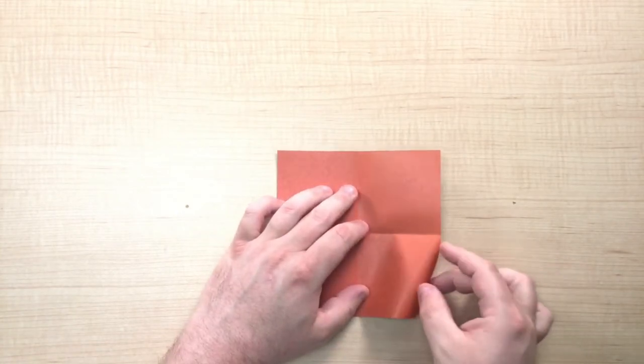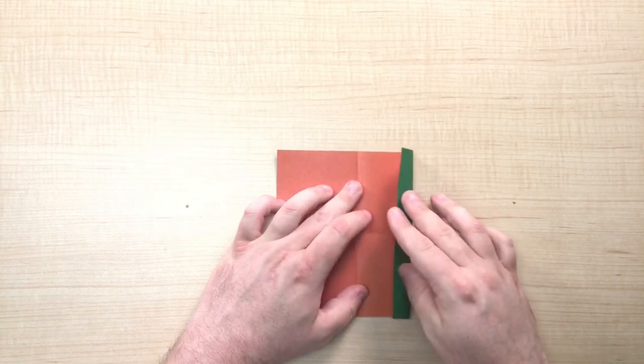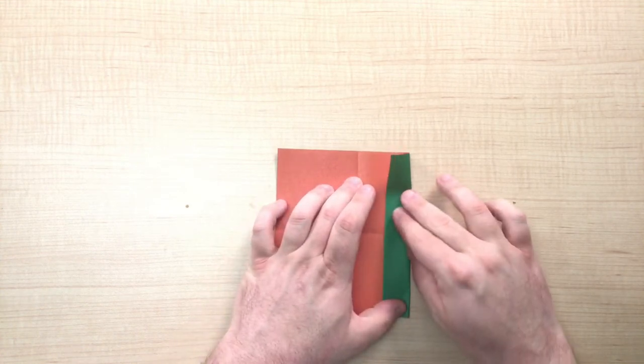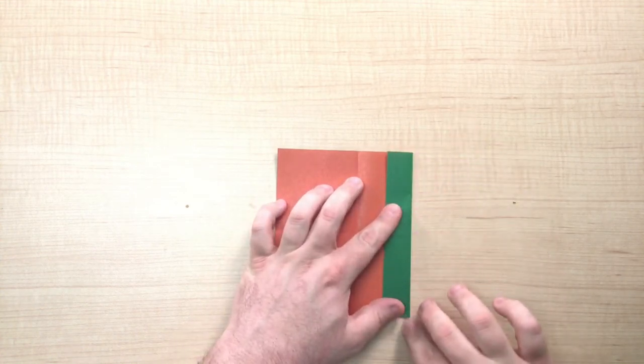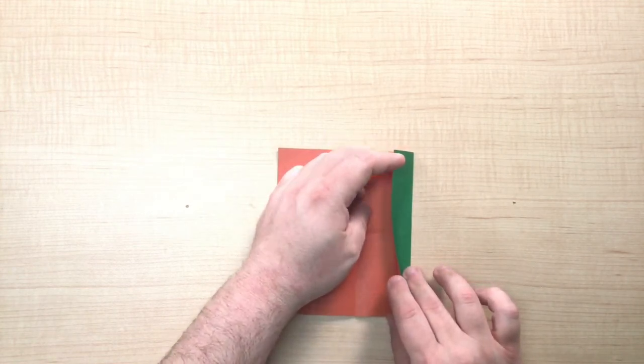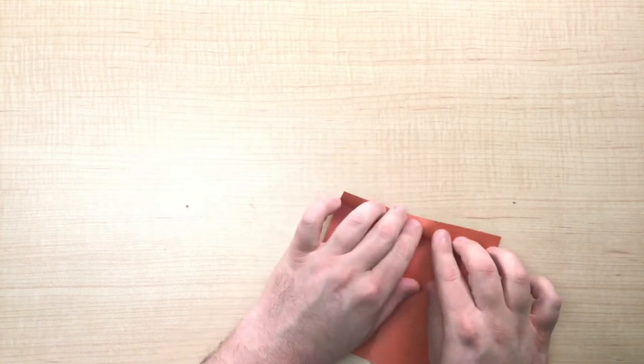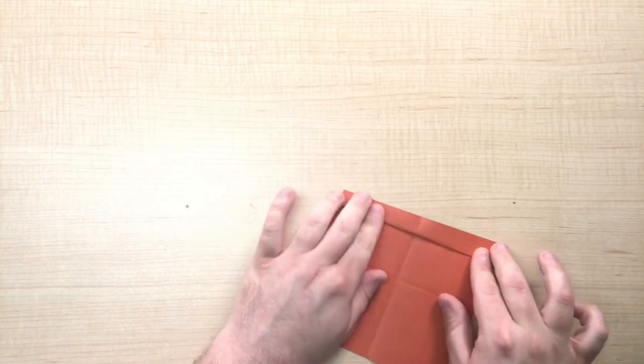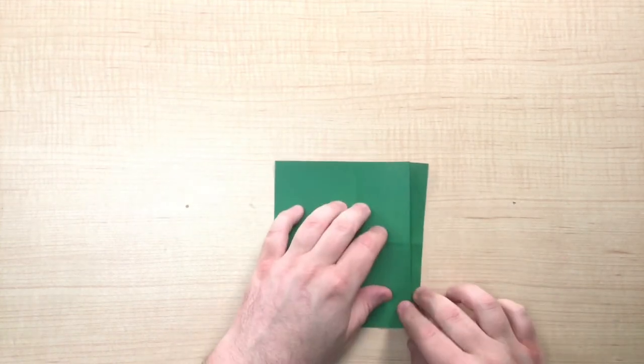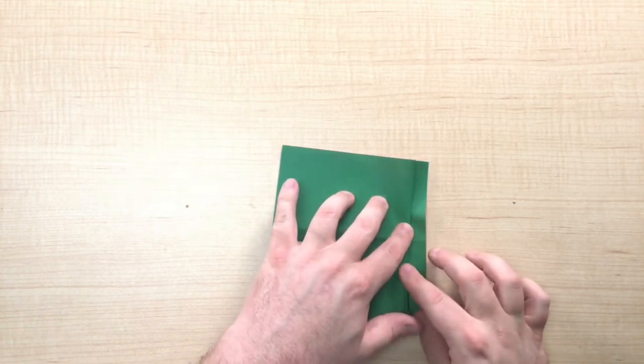Next take the right side and fold it in about one-third of the way from the middle. Then fold it back so that it overlaps the fold that you just made. As you see when I bring this back it just overlaps the fold.